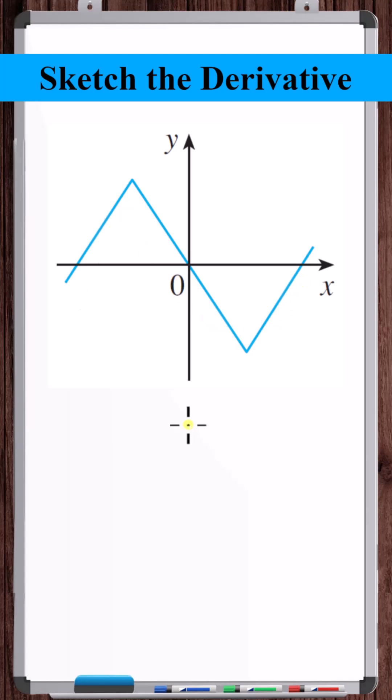Let's sketch the derivative of this function. Looking for key points, we see that there's two kinks in this graph, one here and one here.